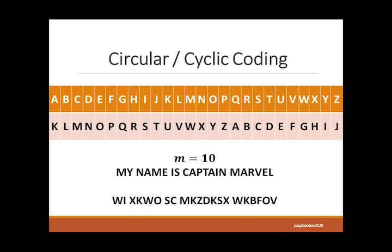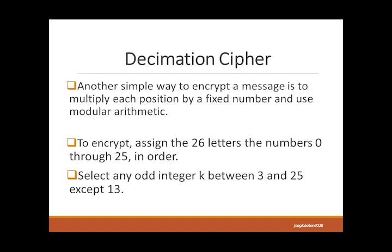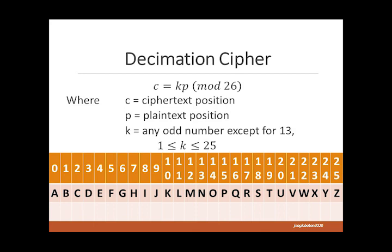You can end the video here and skip the last minutes for the practice activities. But if you want to learn about the summation cipher, you can watch on. The summation cipher is another cryptosystem that uses modular arithmetic and, instead of addition, uses multiplication. To start, assign the plain text position from a = 0 to z = 25, then select any odd integer between 3 and 25 as a multiplier, with the exception of 13, which is a factor of 26.